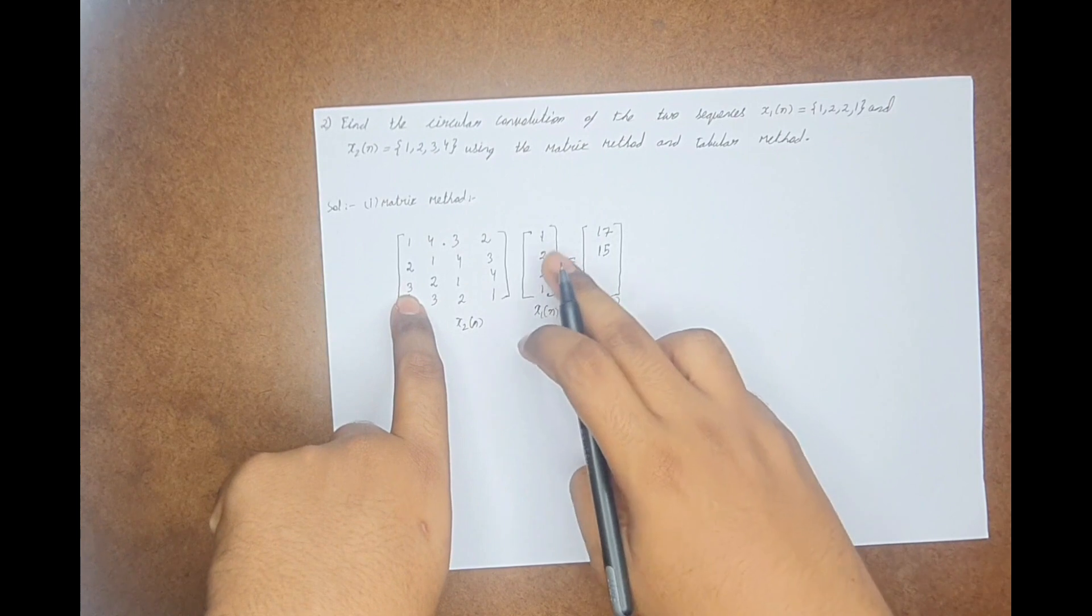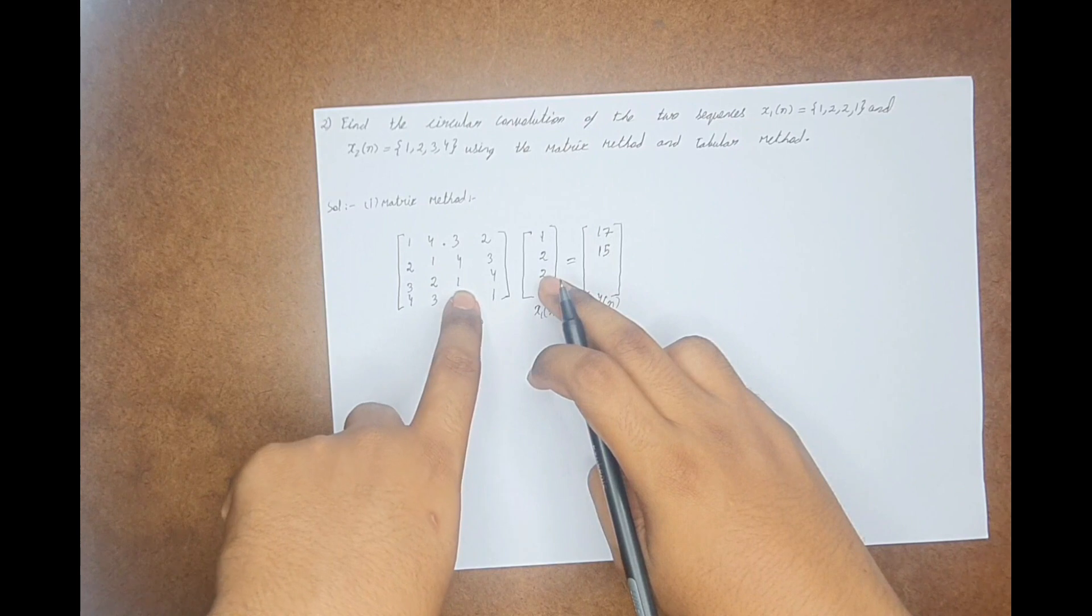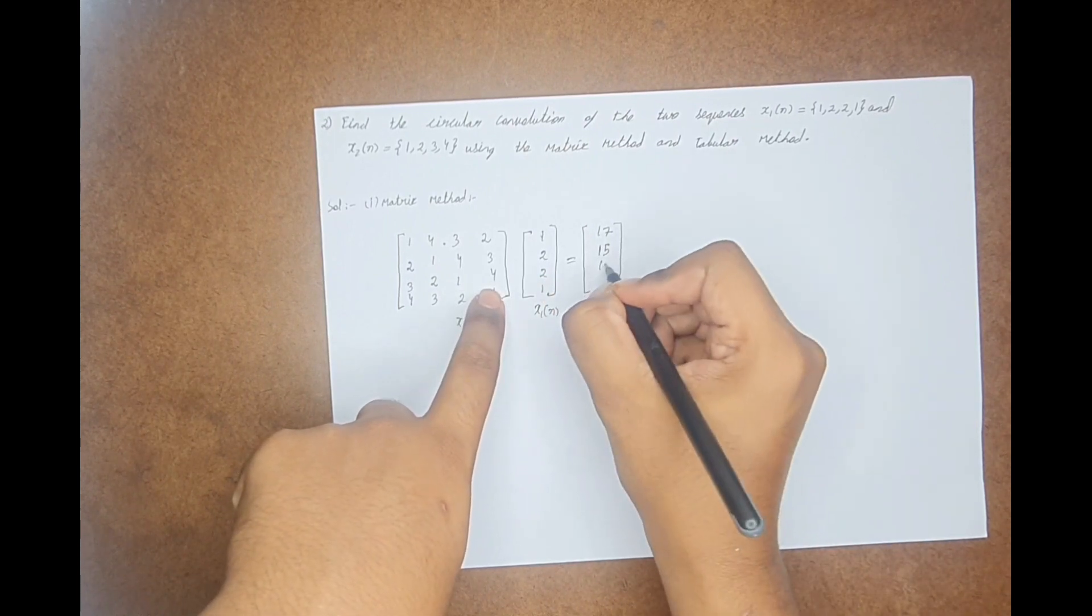Now, multiply the third row with this, which is 3 plus 4 is 7, 7 plus 2 is 9, 9 plus 4 is 13.